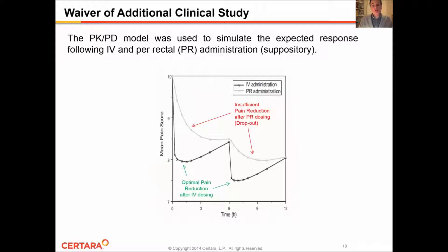The second type of trial simulation performed was to waive what we believed was an unnecessary study. We developed the PKPD model and simulated the expected response — pain reduction from baseline — following intravenous and intrarectal administration. We can clearly see that the gray line results in an insufficient pain reduction, and also significant dropout after intrarectal dosing. The simulations also tell us that intravenous dosing would result in an optimal pain reduction, with an accumulation of effect following multiple doses.